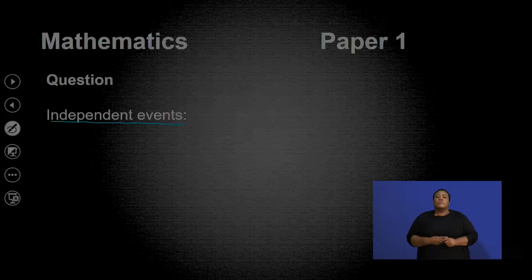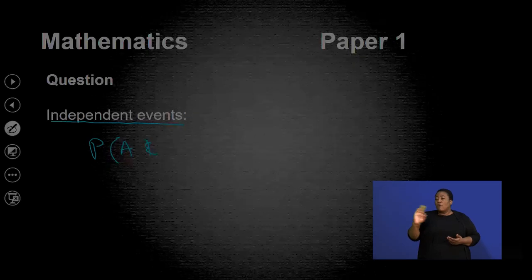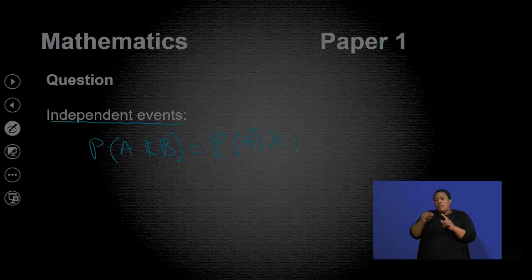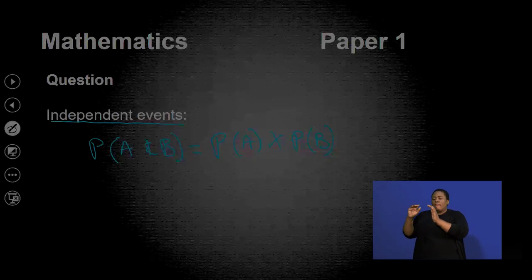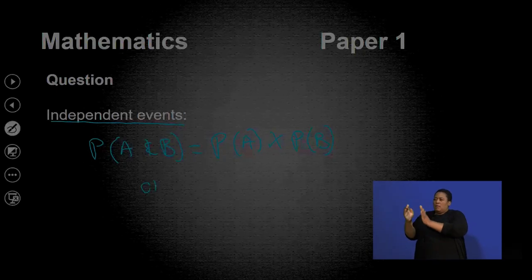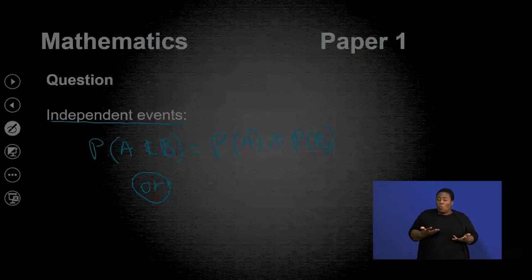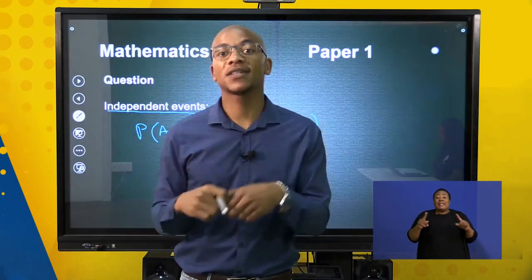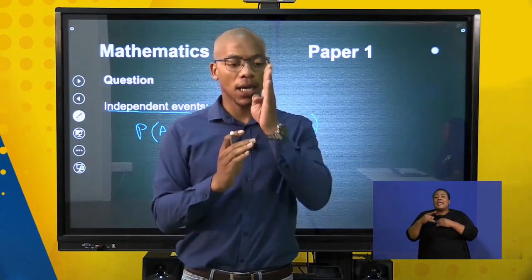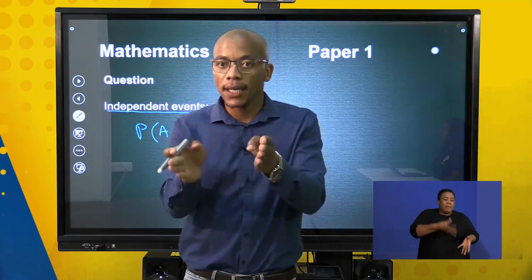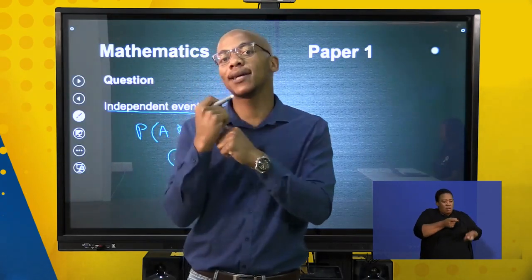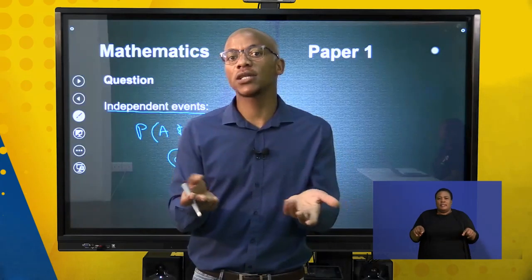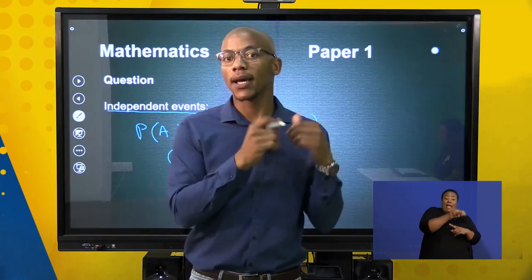With mutually exclusive events we use 'or' in the formula because it's either this or that. With independent events we use 'and' because we're talking about getting a head and getting a six when throwing a die. That's why with independent events the formula uses 'and', and with mutually exclusive it's 'or'. Let's look at an actual question to make the difference between these two concepts clear.